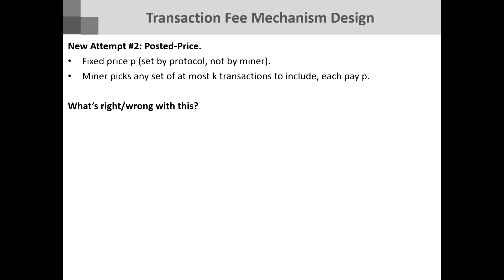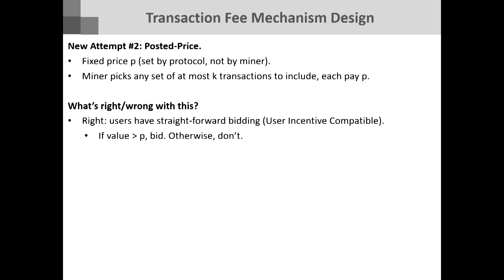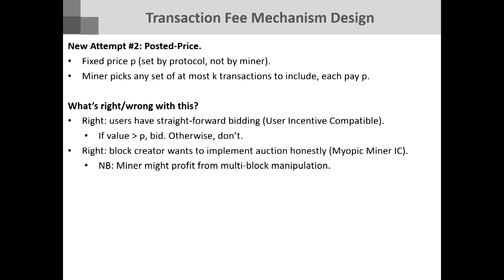Another thing you might do as a classical auction designer: just set a posted price. Imagine the blockchain itself can learn some good price P to set, and it says this is the price of inclusion — you can pick at most K transactions, but whoever is willing to pay P gets in. This is nice because it's incentive compatible for users. And if this is the hard-coded protocol with no way for the miner to get more revenue, the miner also wants to implement it, because they can only get P out of people who bid above P.